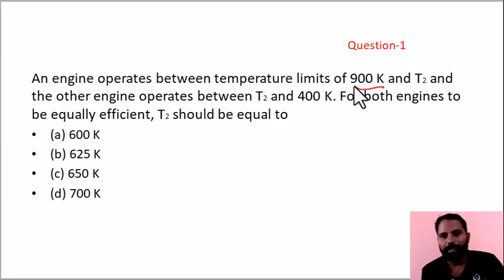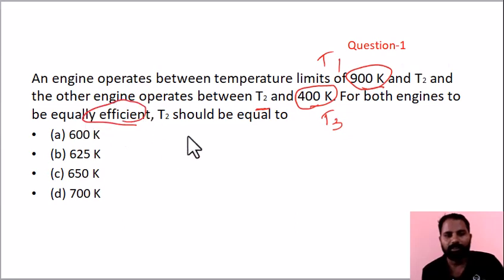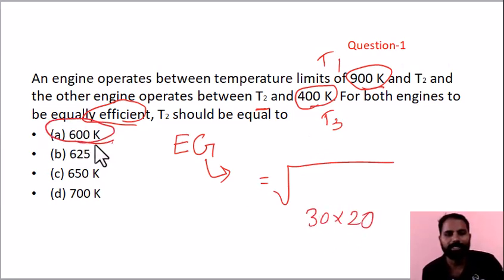Engines in series: T1 is 900 Kelvin, T3 is 400 Kelvin, find T2. What condition? Equally efficient, so EG - geometric mean. T2 equals square root of 900 times 400, which is 30 times 20, equals 600 Kelvin. Option A is the answer.